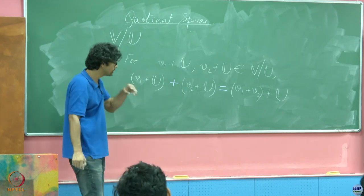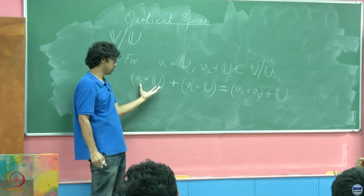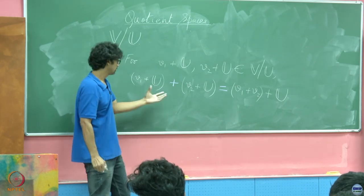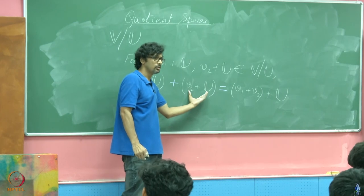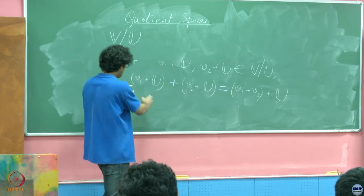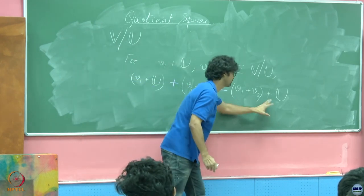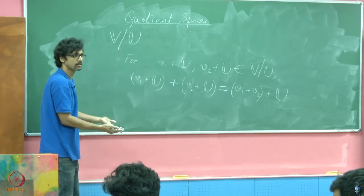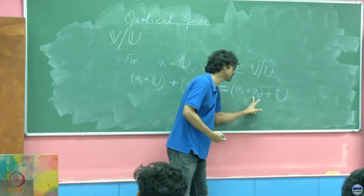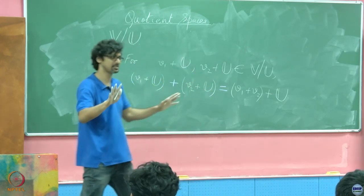That is, how do we check that? Suppose you take V1 plus U to be this object, your friend takes this object to be V1 hat plus U. You take this object to be V2 plus U, your friend calls this object V2 hat plus U. However, upon adding your version of the object that is V1 plus U, if you have ended up with V1 plus V2 plus U like so, your friend should also end up with the same affine set at the end of the day which is representable by V1 hat plus V2 hat plus U. Is that clear or have I said a lot of things all at one go?